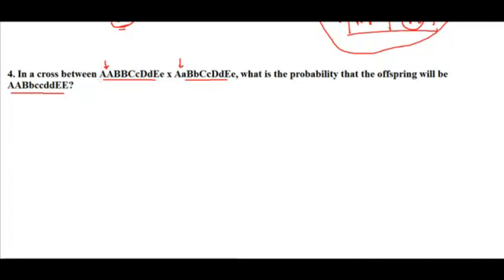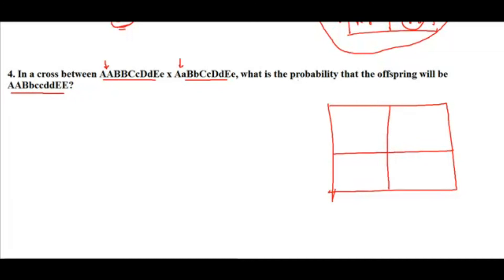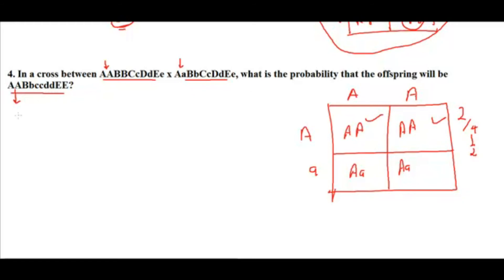Let's take gene A first. Parent one is AA and parent two is Aa. Using a Punnett square for gene A individually, the possible combinations are AA, AA, Aa, Aa. The offspring combination asked for is AA. There are two chances out of four, so the probability is one by two.